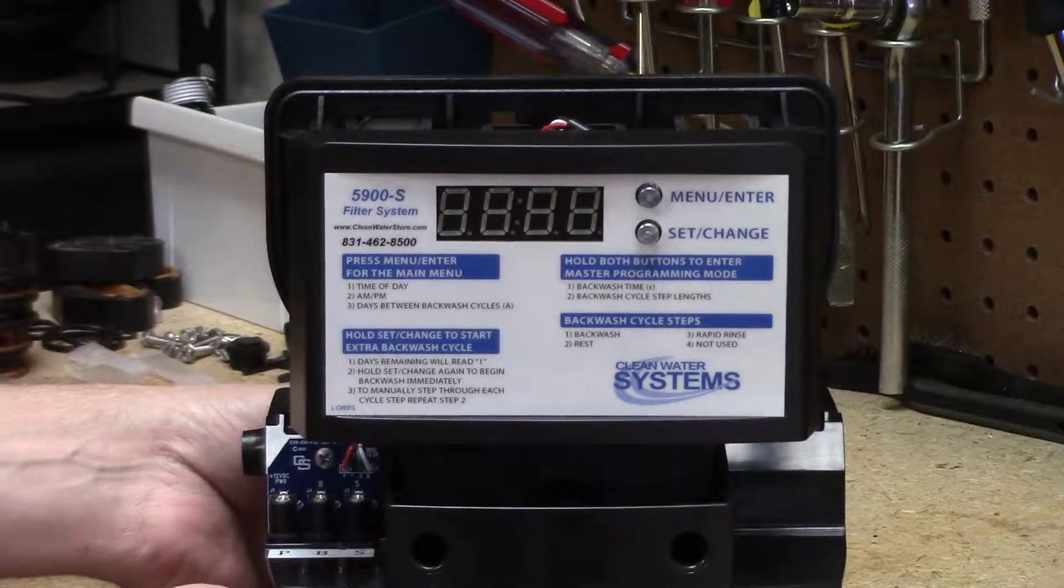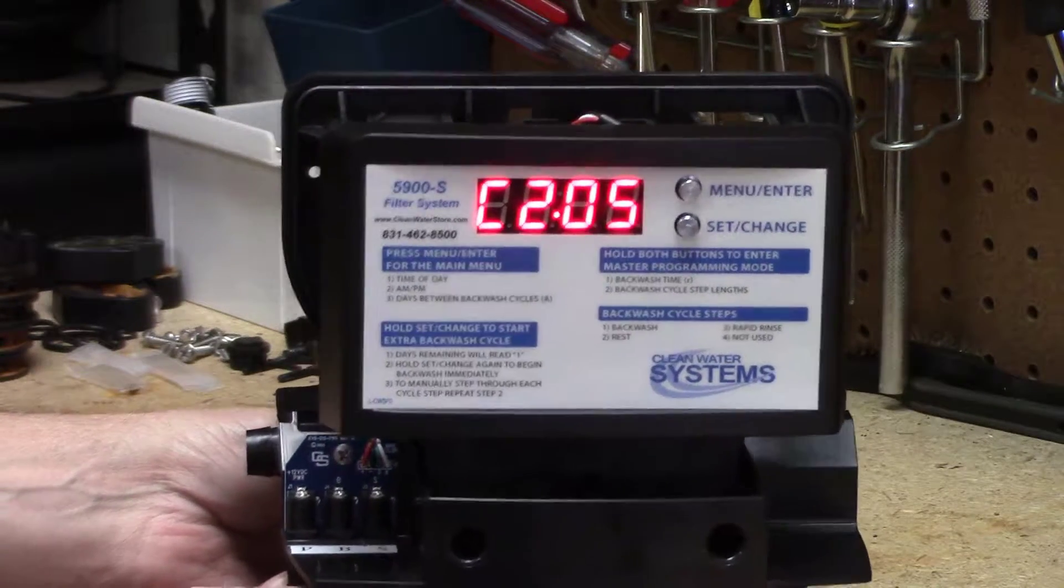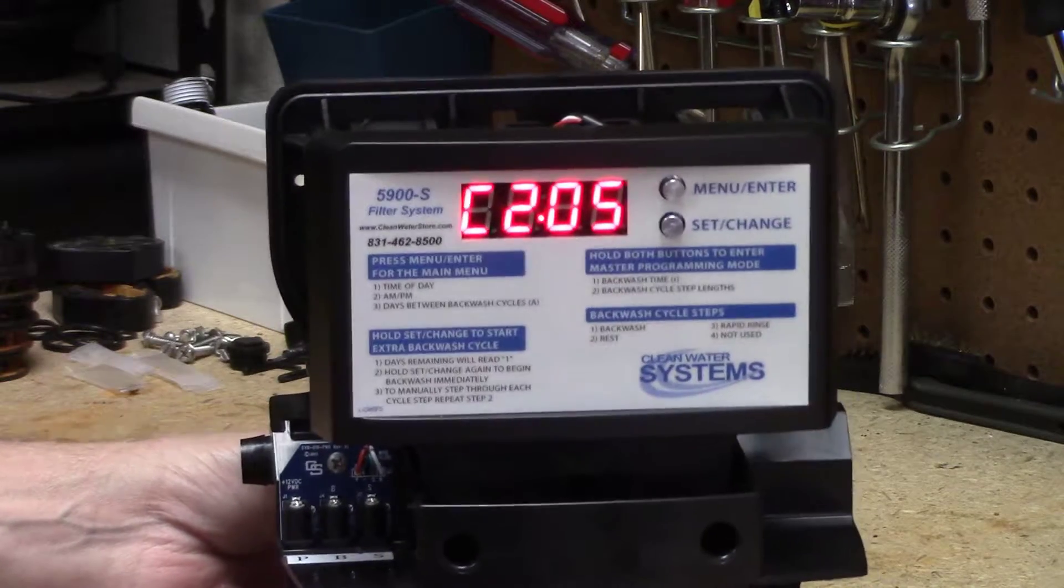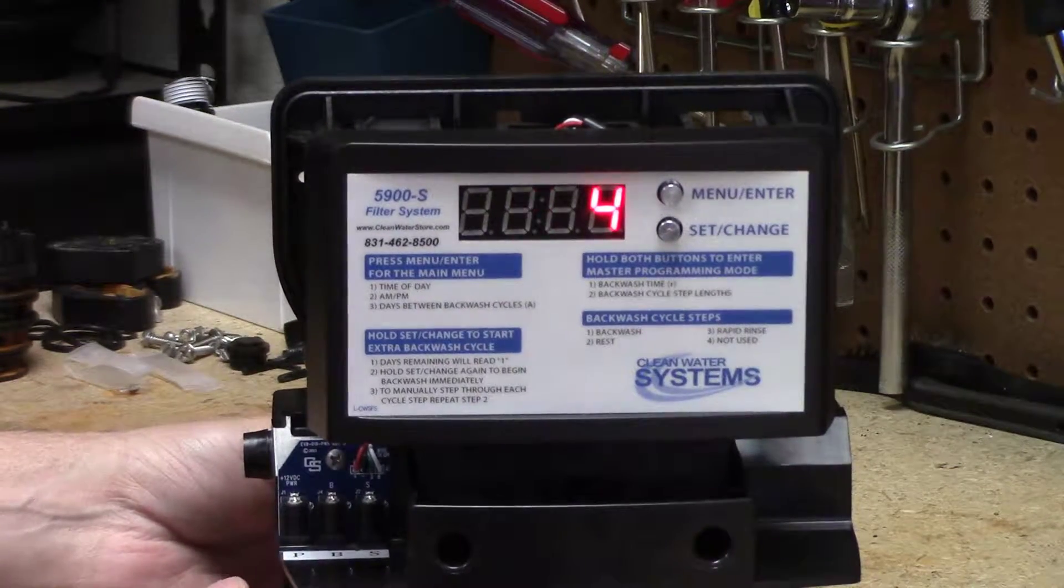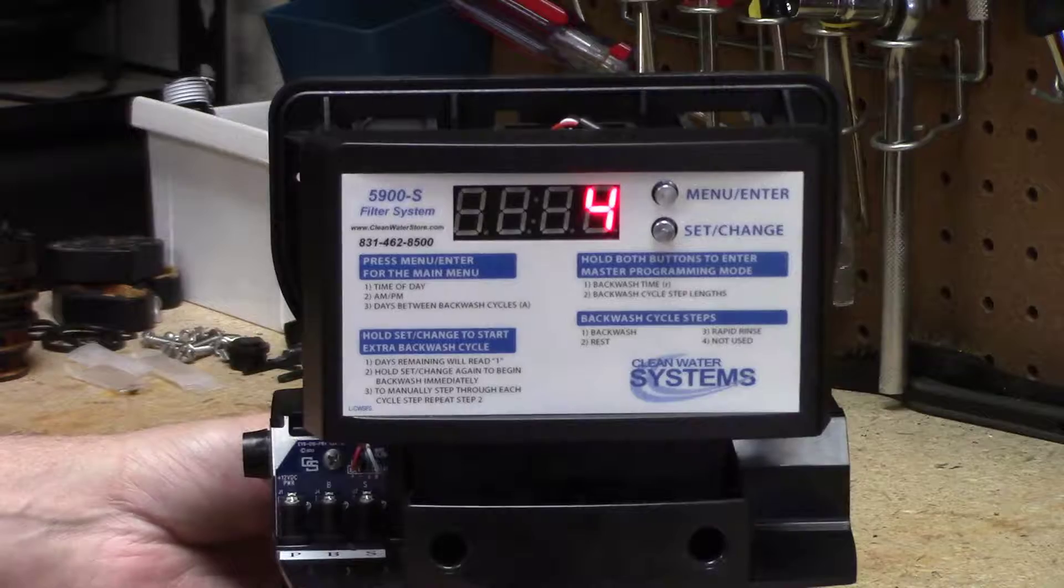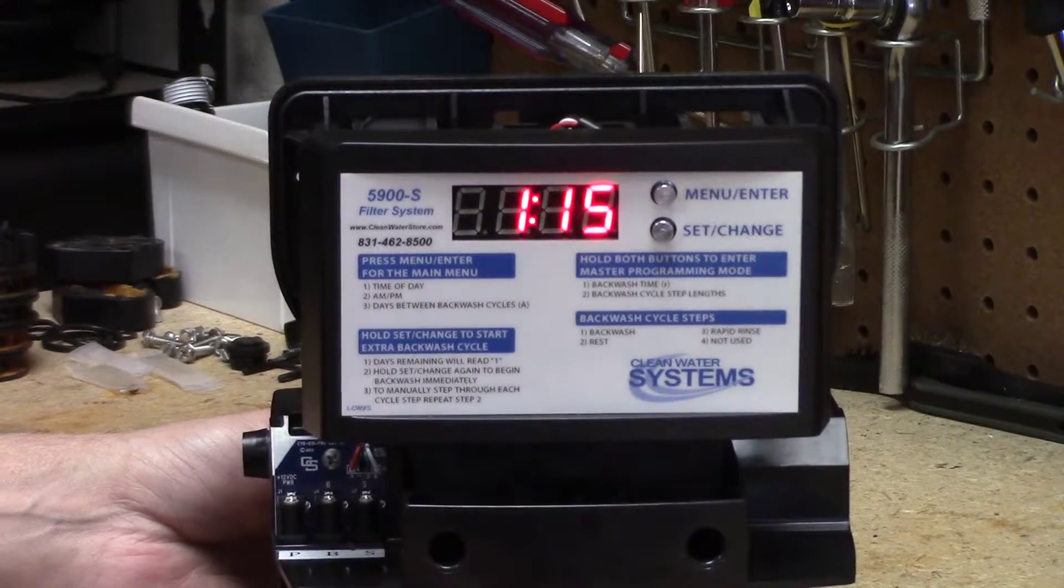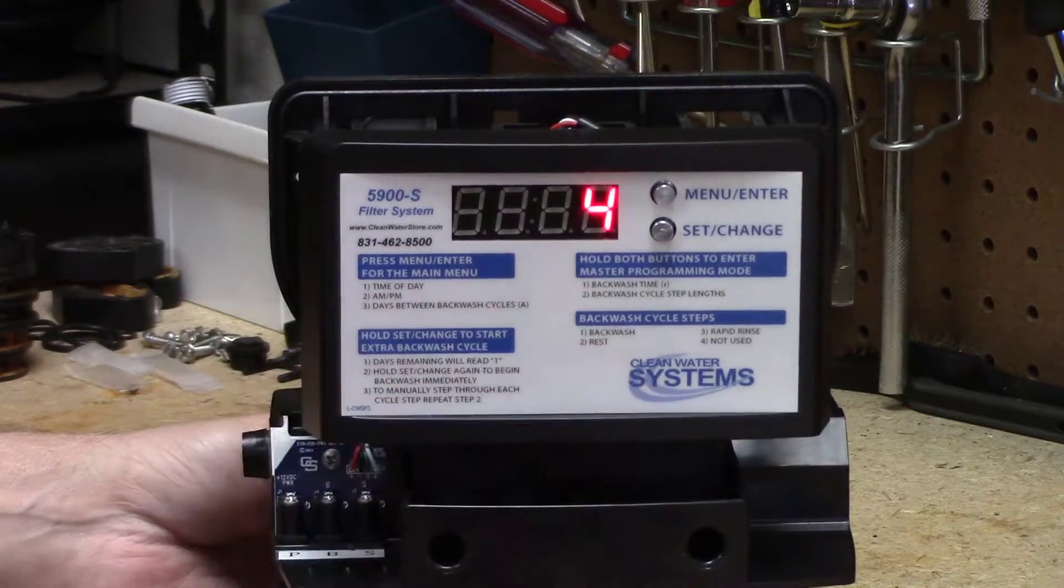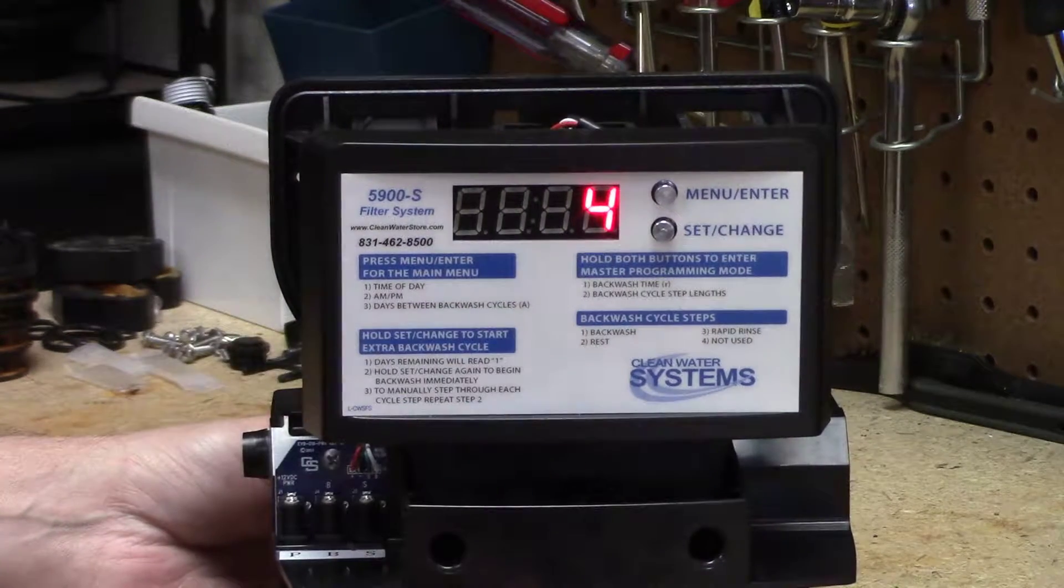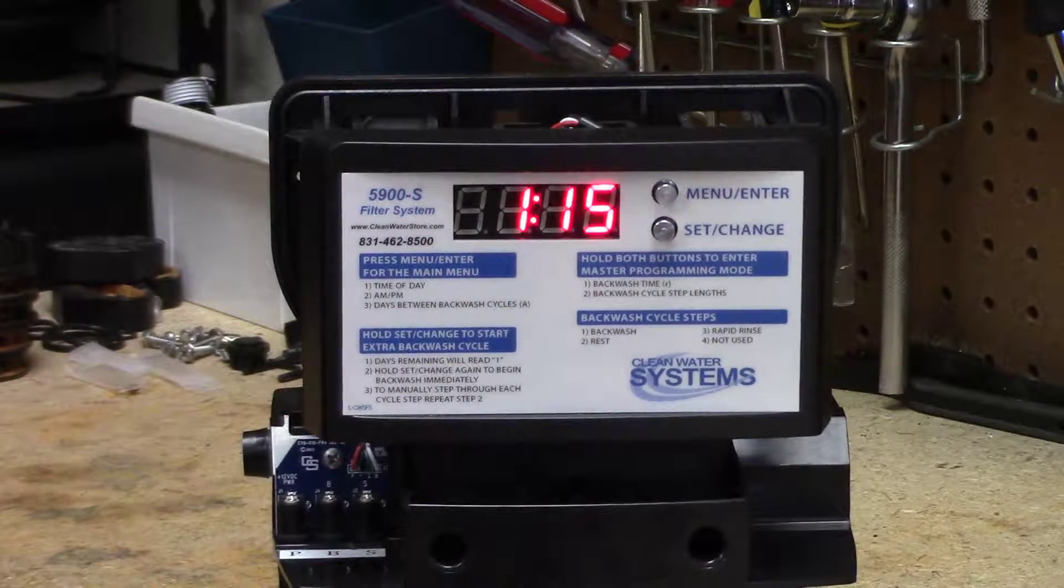When you plug the valve in, you're going to see a C20 something—that's the computer revision date. It might change over time, and very quickly it'll change between a couple things. Don't press any buttons for a few seconds. Wait until it's going back and forth between the clock time and the number of days that are remaining until the next time the unit backwashes.